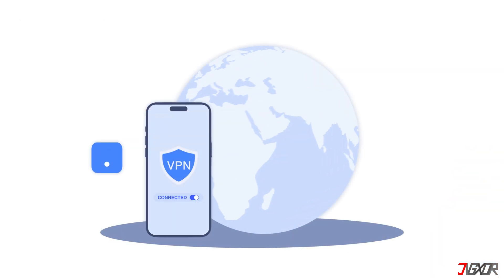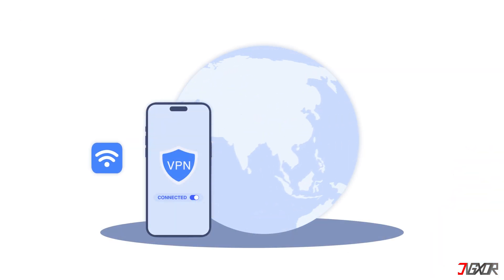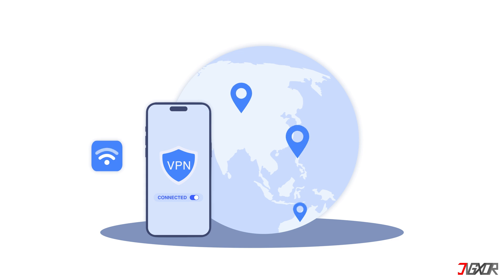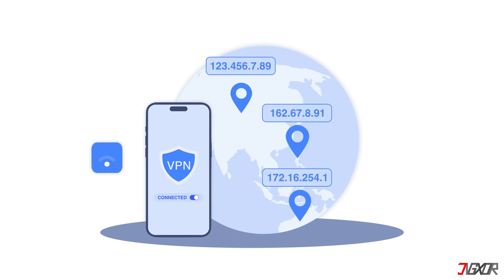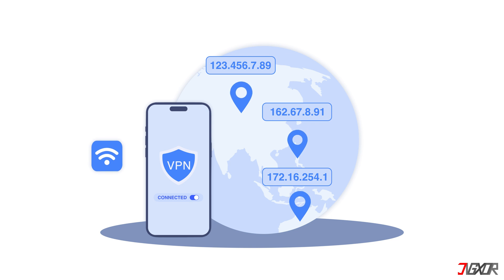A VPN changes your IP address by routing your internet traffic through a server in another country. This gives you a temporary IP address from that country, effectively changing your virtual location.